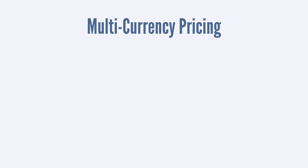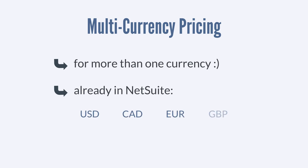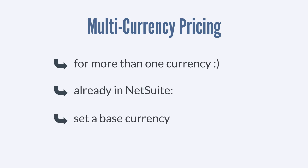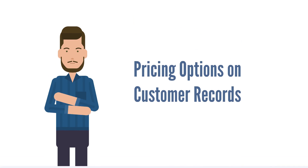The final item record pricing feature is multi-currency pricing. Multi-currency pricing allows companies that conduct business in more than one currency to manage their prices for each of those currencies. NetSuite automatically provides for USD, CAD, EUR, and GBP, but you would need to create currency records for any currencies beyond these four. You would also need to set the base currency for your company — the currency NetSuite defaults to. Each subsidiary in a company can have its own base currency. Each currency tab on the item record has the same price level and quantity pricing options as the USD tab; simply enter the base price in that currency and NetSuite will do the rest.